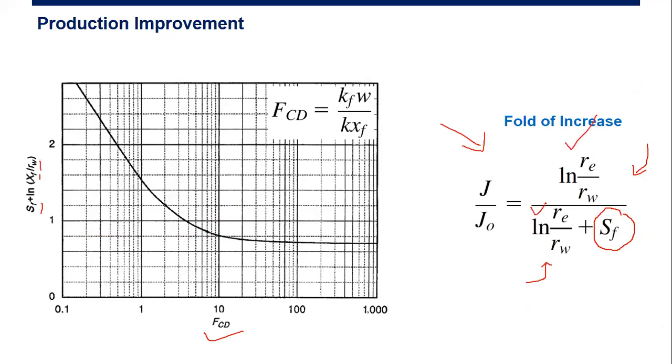So if you have this one, you have this one, and now you have minus 5.85, then it means that the productivity index can be multiplied several times. That is the fold of increase, berapa kali lipat peningkatan productivity. Okay, so now we can understand how the fracture can increase the productivity, how the fracture can result in stimulation.